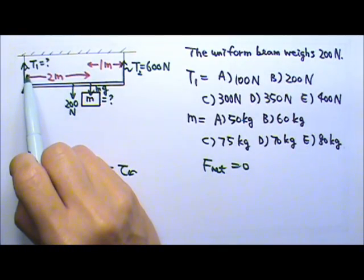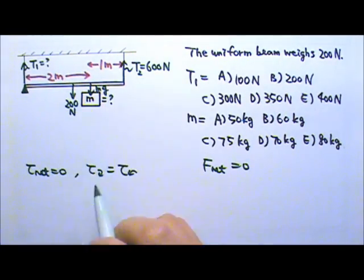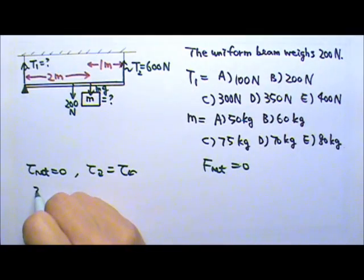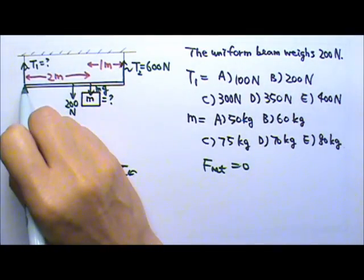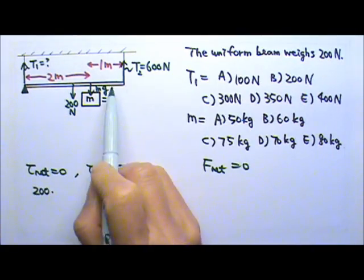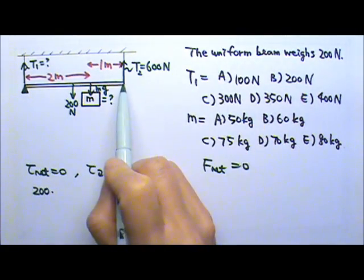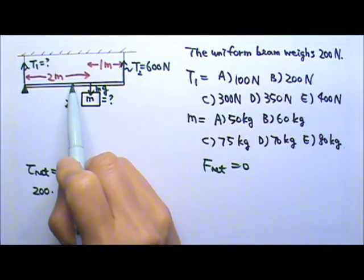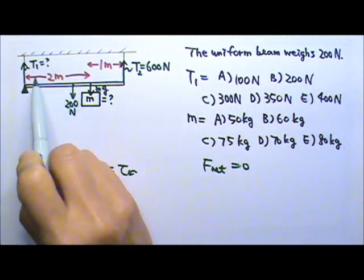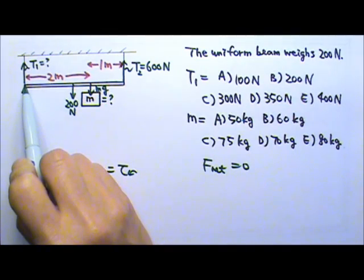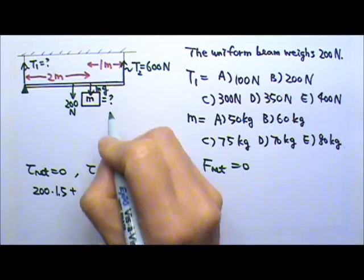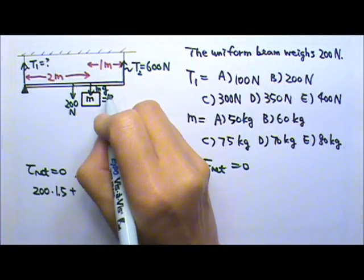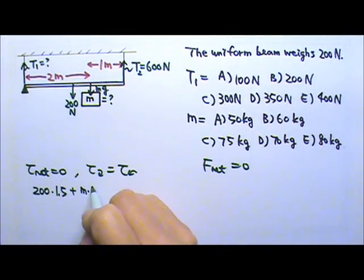T1 will not give us any torque. So the clockwise torque is produced by the 200N times the lever arm. The uniform beam is 3 meters long, 2 plus 1. The center of mass is right at the center, so it is 1.5 meters from the axle. So the lever arm is 1.5, and there is the torque produced by M times G.